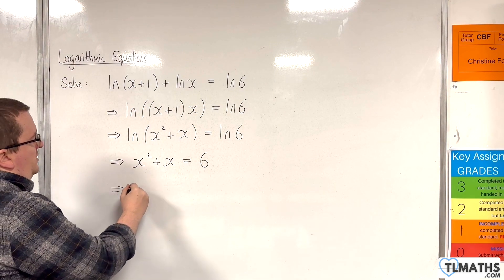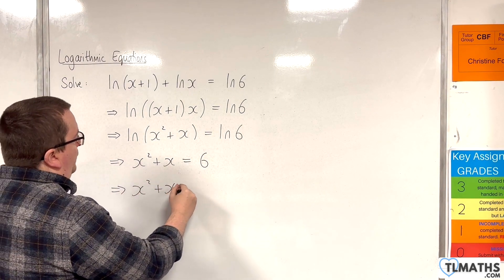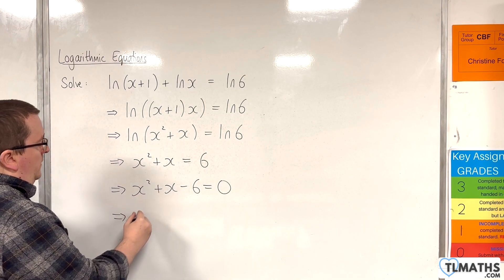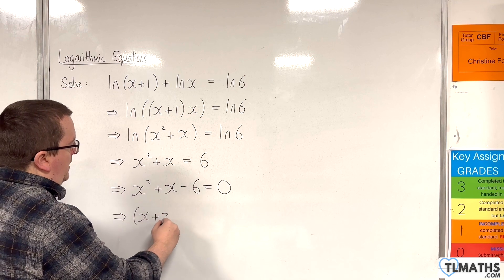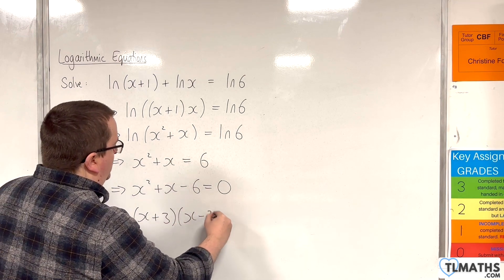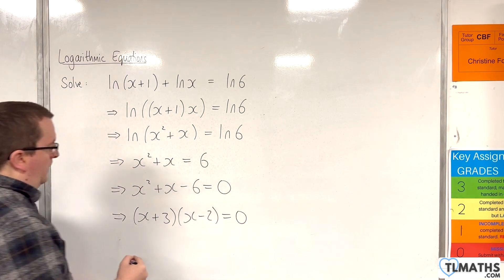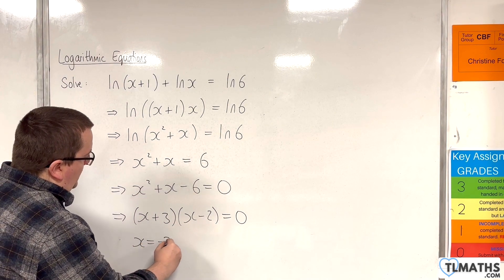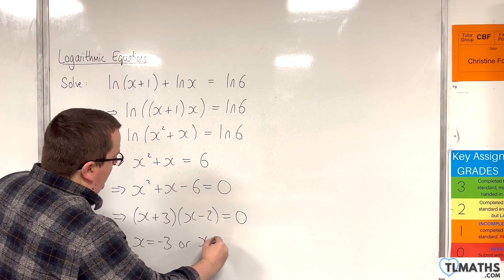So if I subtract 6 from both sides, and then we factorize this, we're going to get x plus 3 times x take away 2 is equal to 0. So either x is equal to negative 3 or x is equal to 2.